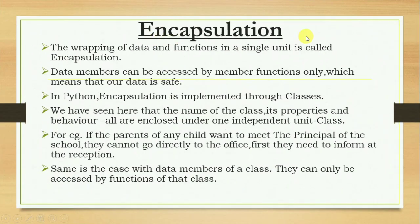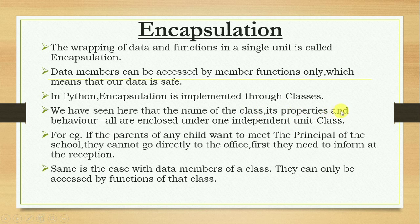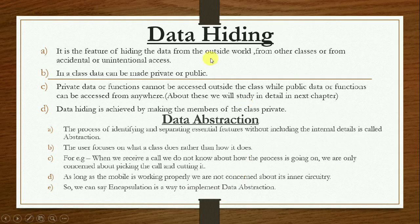Encapsulation refers to the wrapping of data and functions in a single unit. The data members can be accessed only by the member functions, which means the data is safe and nobody can access it without permission. In Python, encapsulation is implemented through classes. The name of the class, its properties, and behavior are all enclosed under one independent unit called a class. For example, if parents want to meet the school principal, they cannot go directly — they must first inform at the reception.